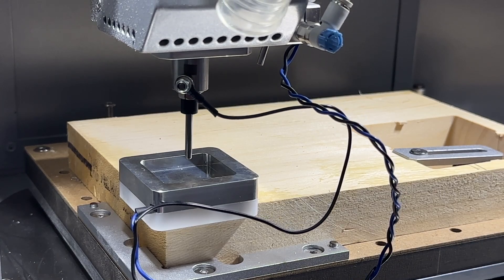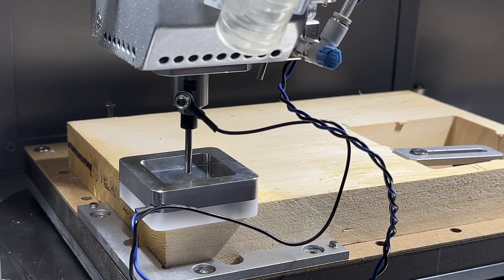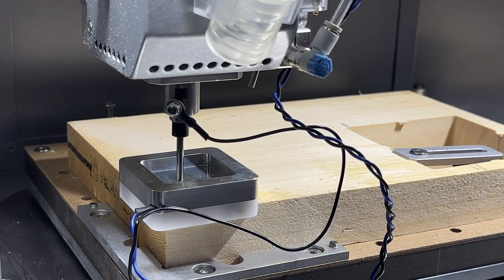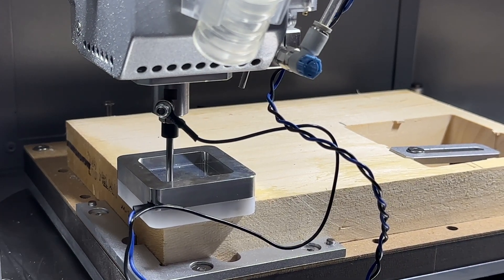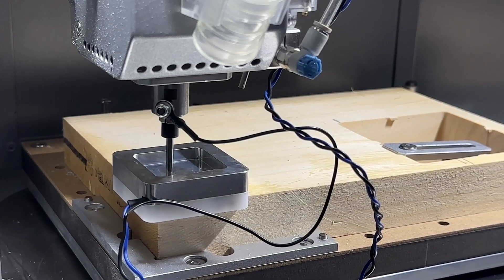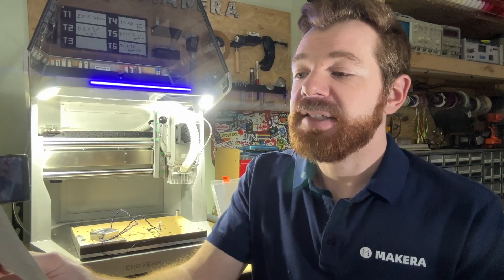After pressing okay, the Carvera Air will automatically lower and move the test rod to touch the base of the block, then touch the side and front edges in order to find the X, Y and Z origin points of your stock. These positions are then automatically saved in the controller.